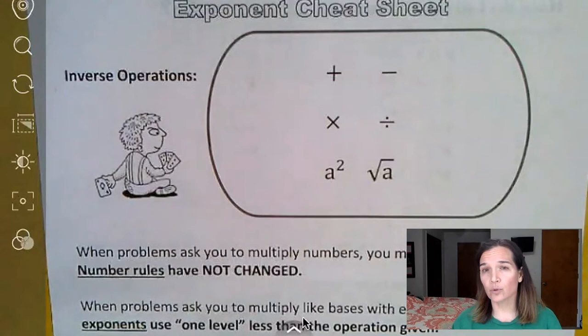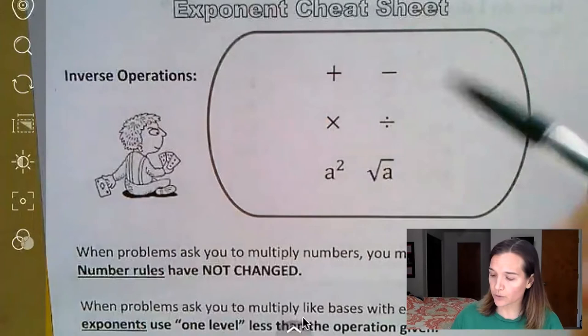And when it comes to exponents, they always follow the rule of one level less than what you think or what it says it should be.